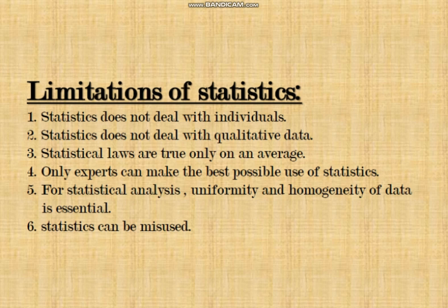You cannot measure someone's honesty in terms of numbers — you cannot say somebody is 80% honest, which would mean he is 20% dishonest. That doesn't make sense. Similarly, you cannot say somebody is 90% or 80% beautiful — beauty is in the perspective of your own mind. What may appear beautiful to you may not appear beautiful to someone else. The same dish you find very tasty may be hated by your friend or family members.